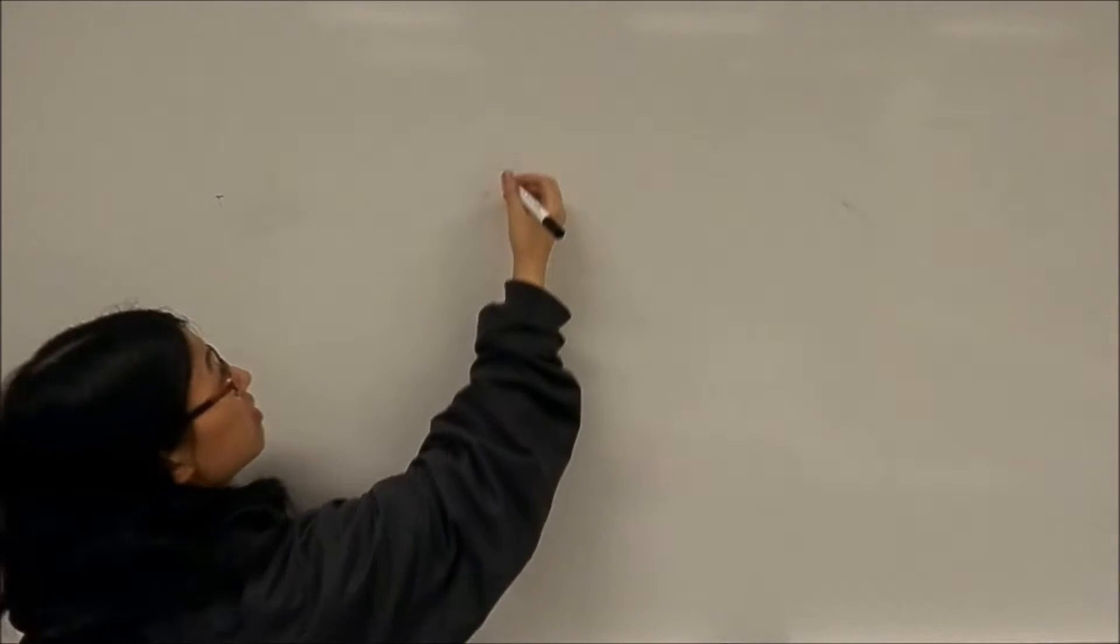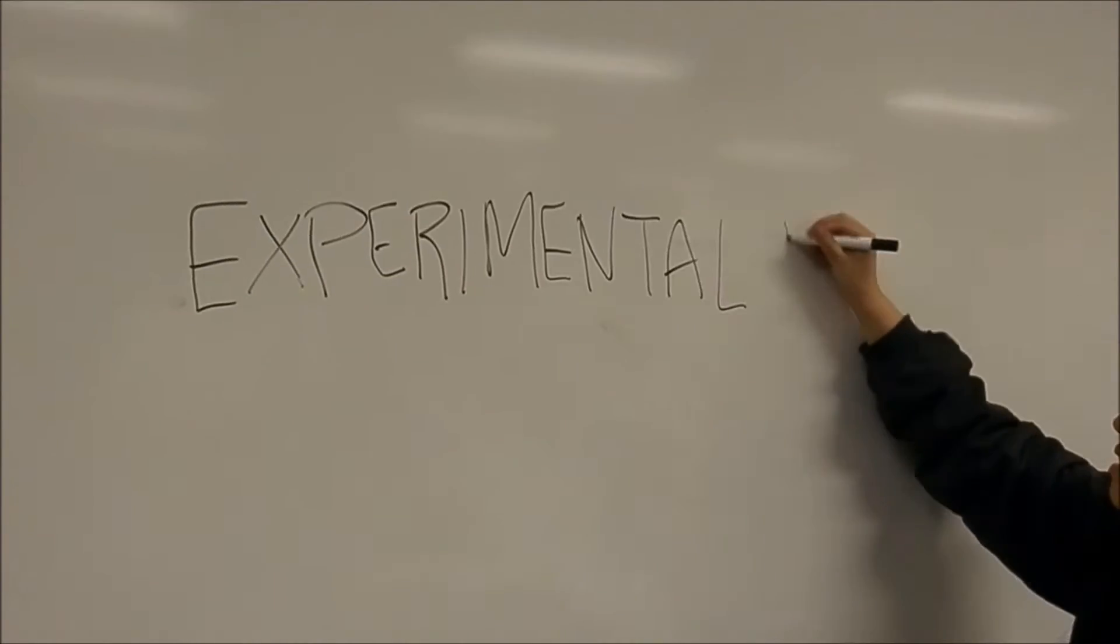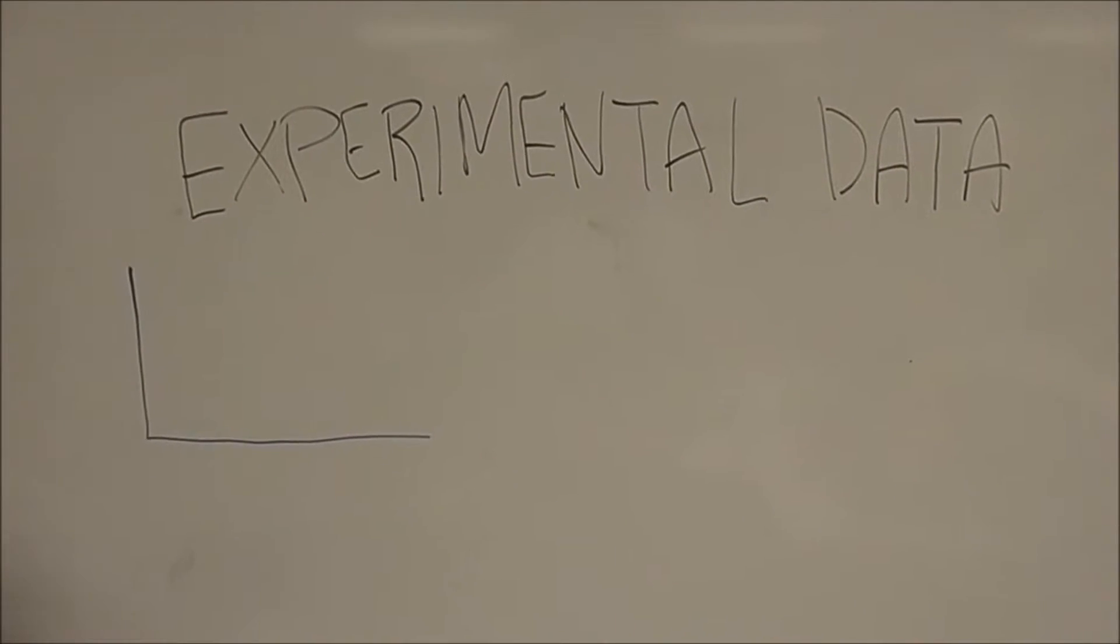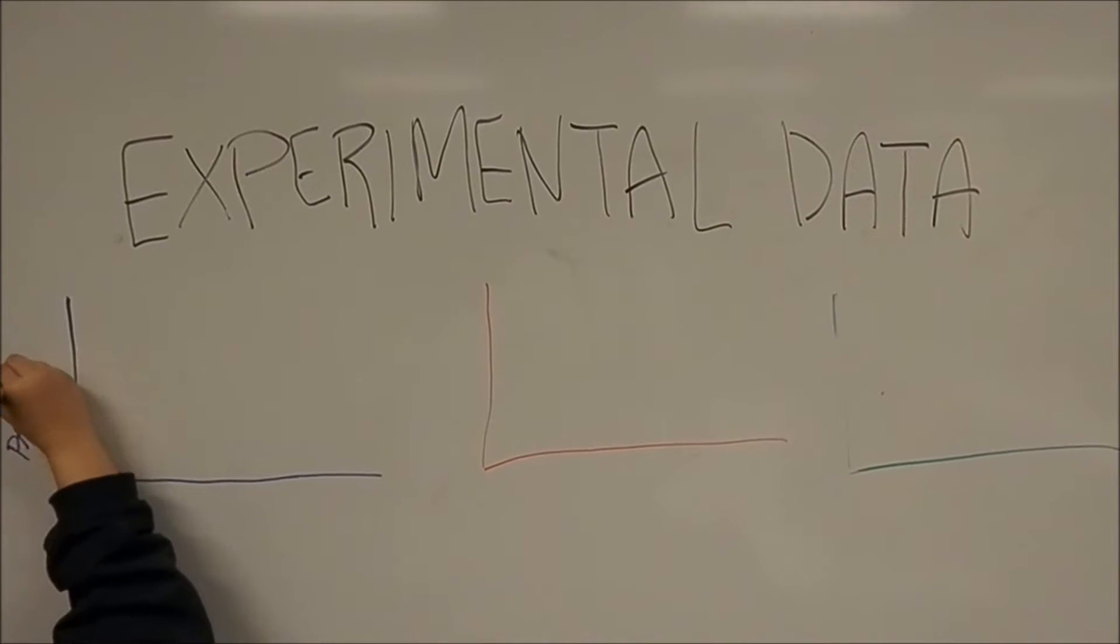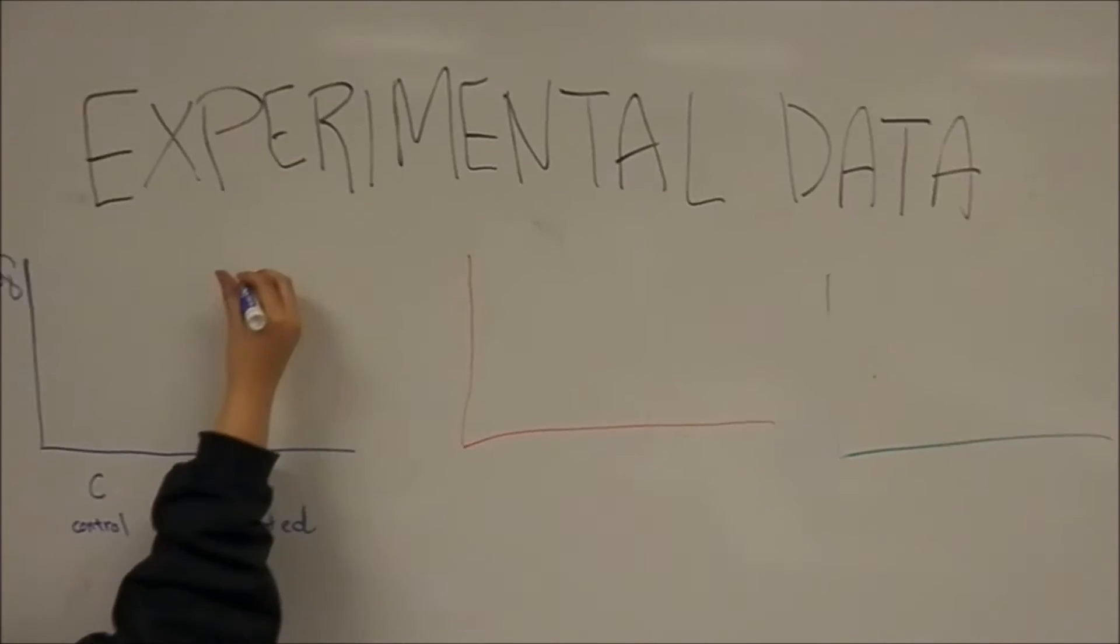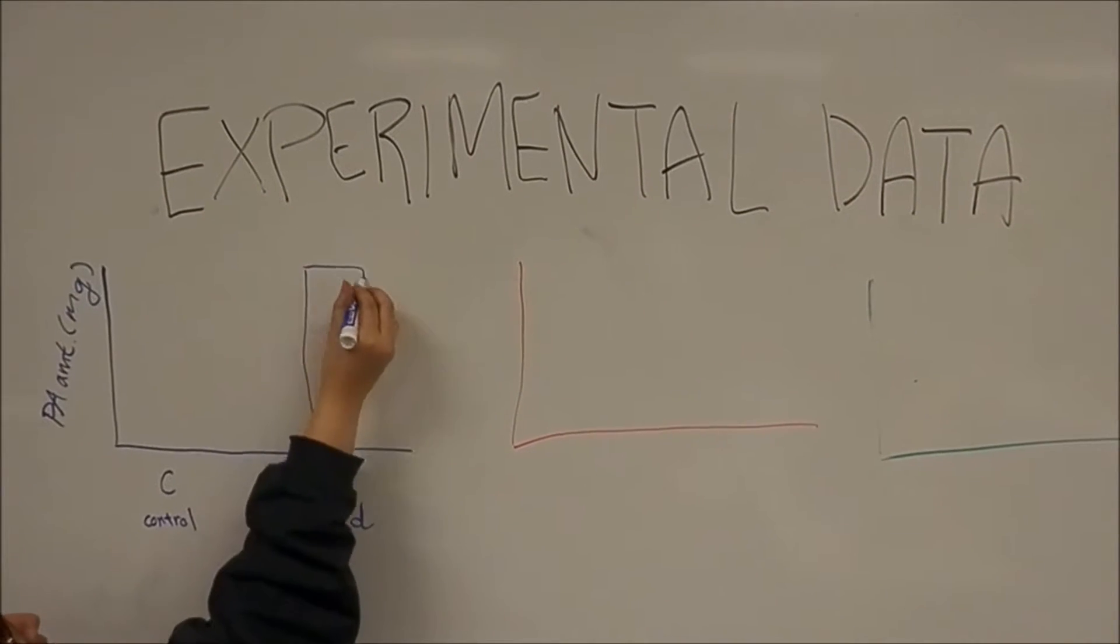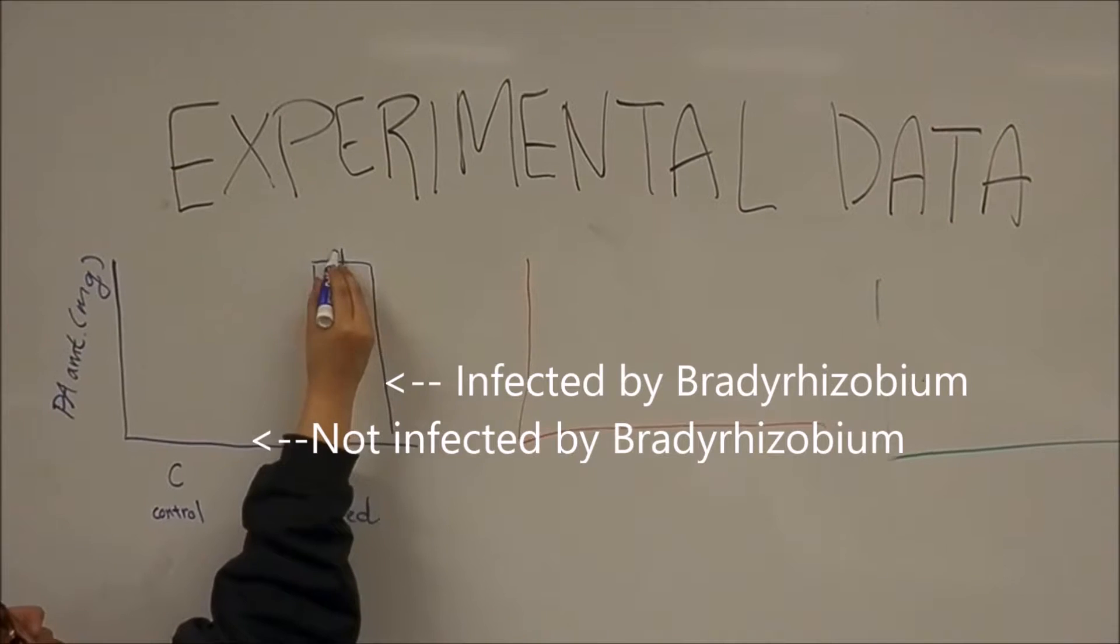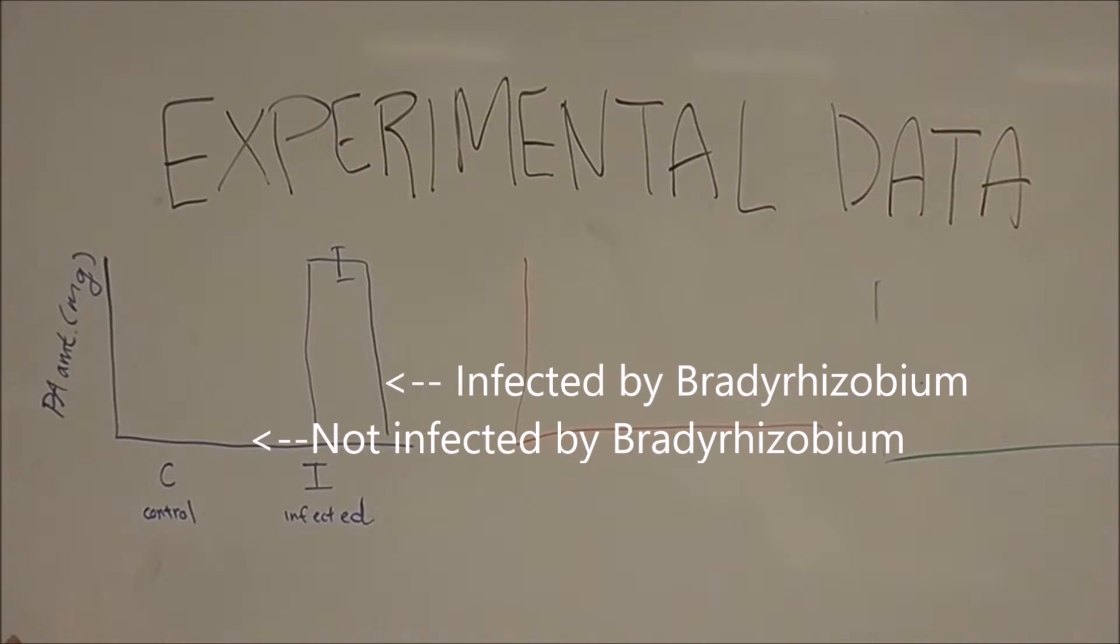So now we move on to the data. An experiment was performed to determine if the biosynthesis of the toxic PA by Crotillaria is dependent on nodulation. The researchers predicted that production of PAs, which are triggered by nodulation-specific transcription factors, and that the first enzyme, homospermidine synthase or HSS, is produced by the plant, not the microsymbiont, and only in the nodules.